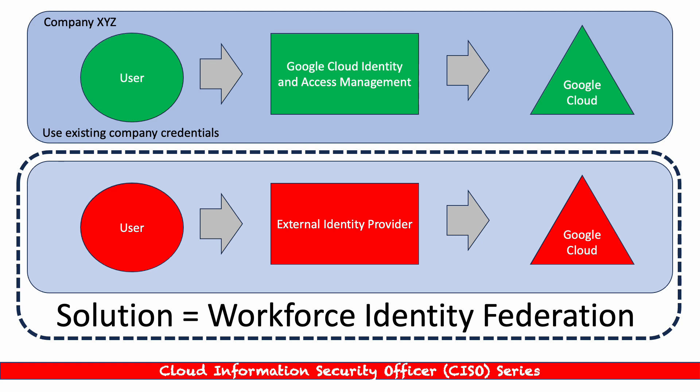At the top of the screen, we have a scenario with a company XYZ and a user. When they access Google Cloud resources — things that require some kind of API connectivity — they are usually using a Google Cloud Identity and Access Management solution, Google's own IAM. In that scenario, they're using existing company credentials. It works great because the user is part of a company using GCP native services, IAM, and accessing Google Cloud. Very seamless, works perfectly well.